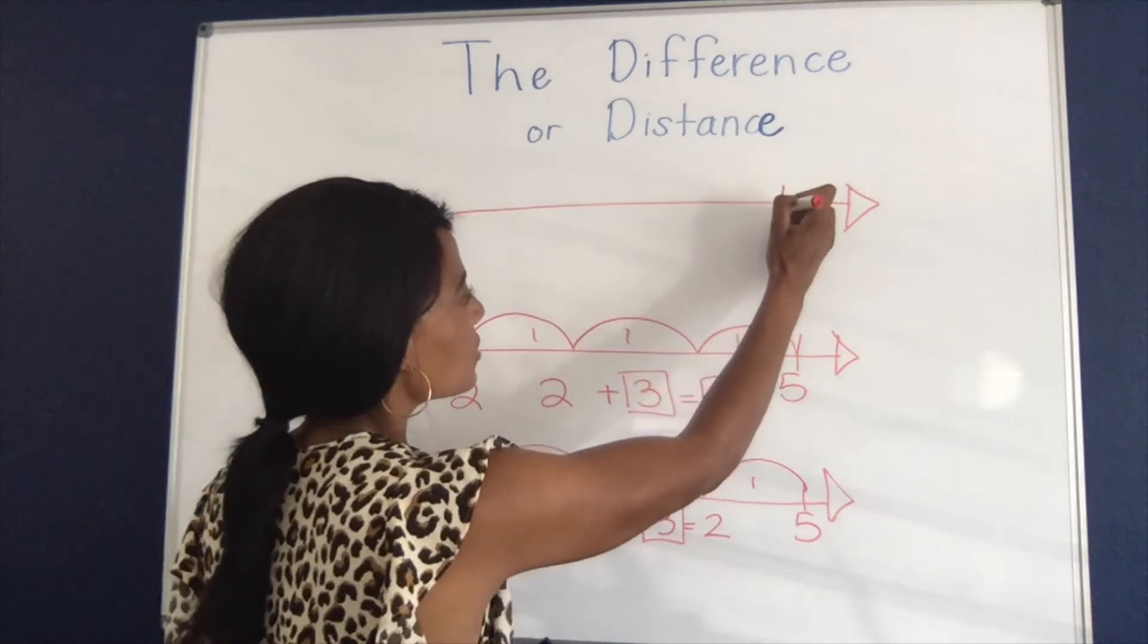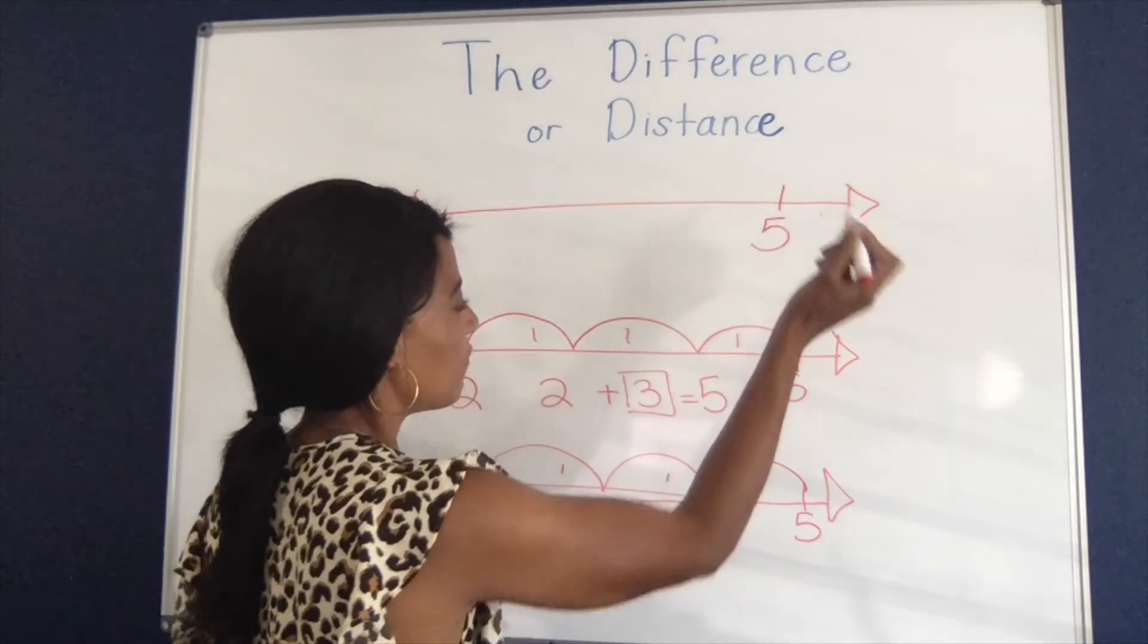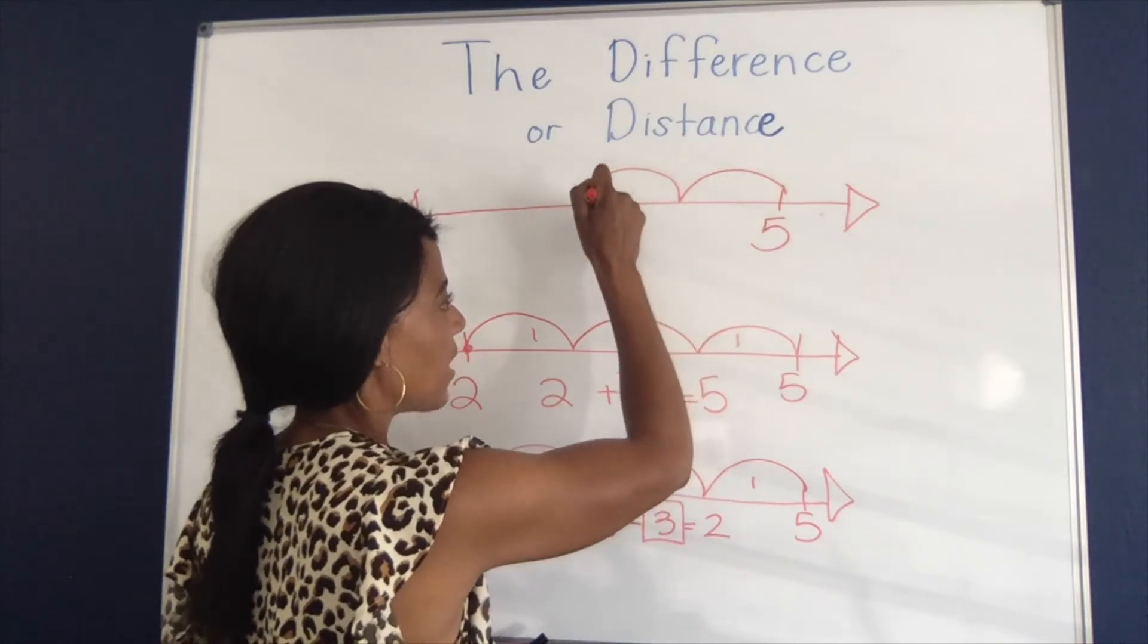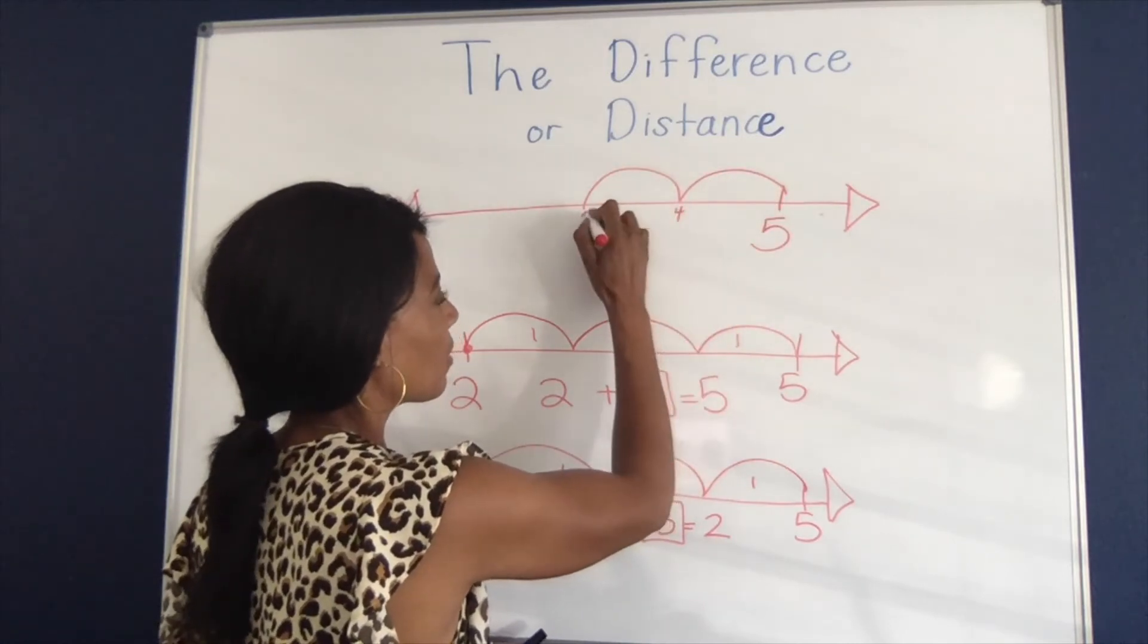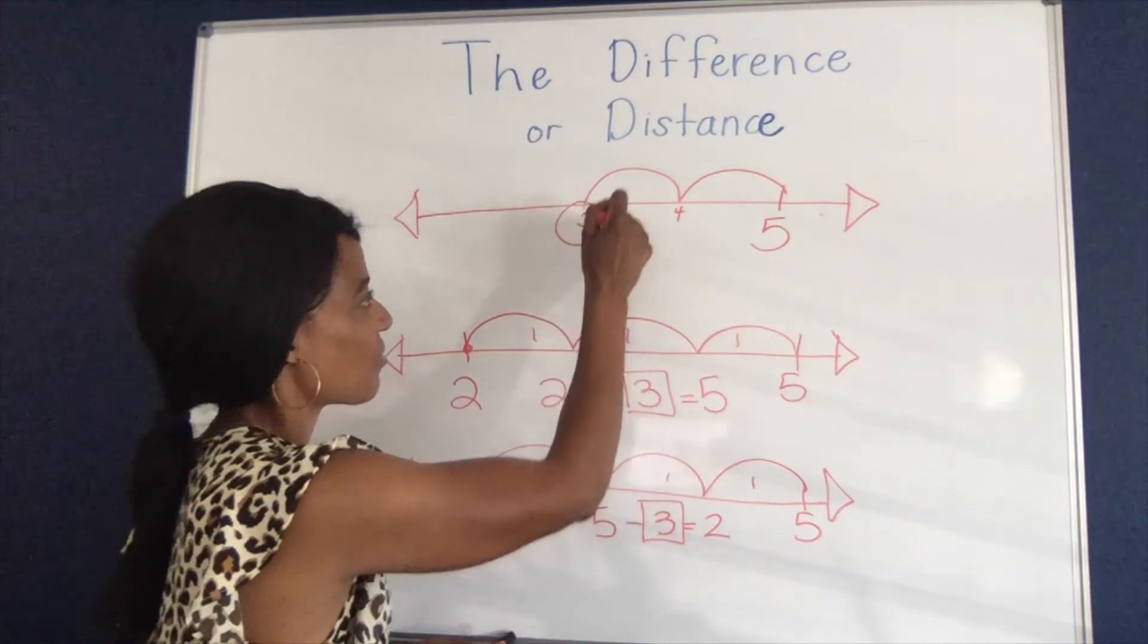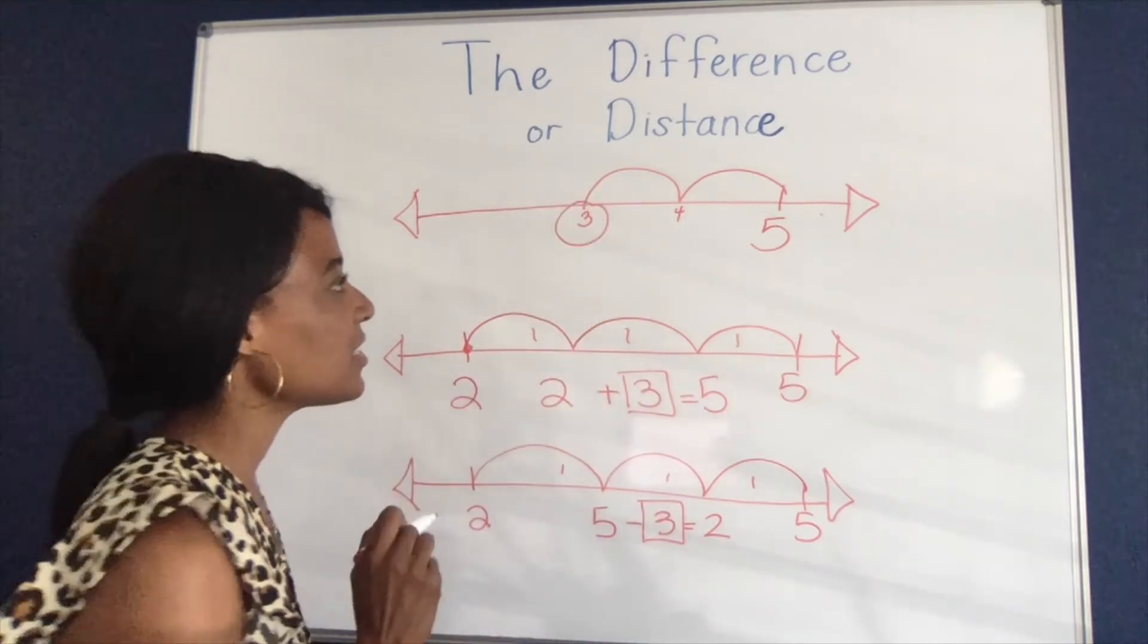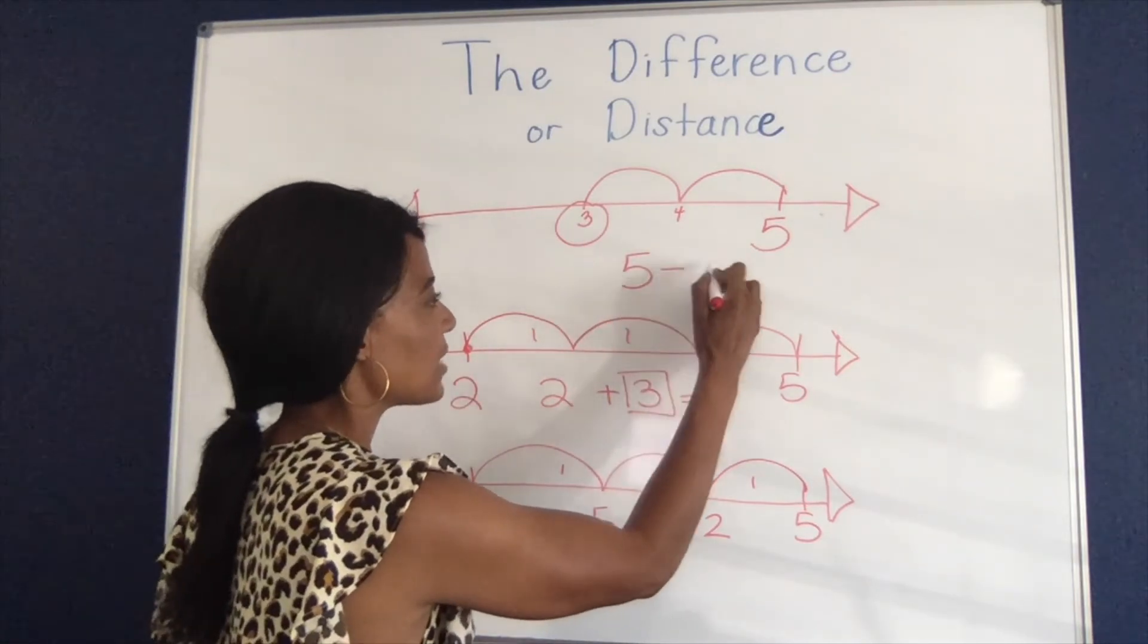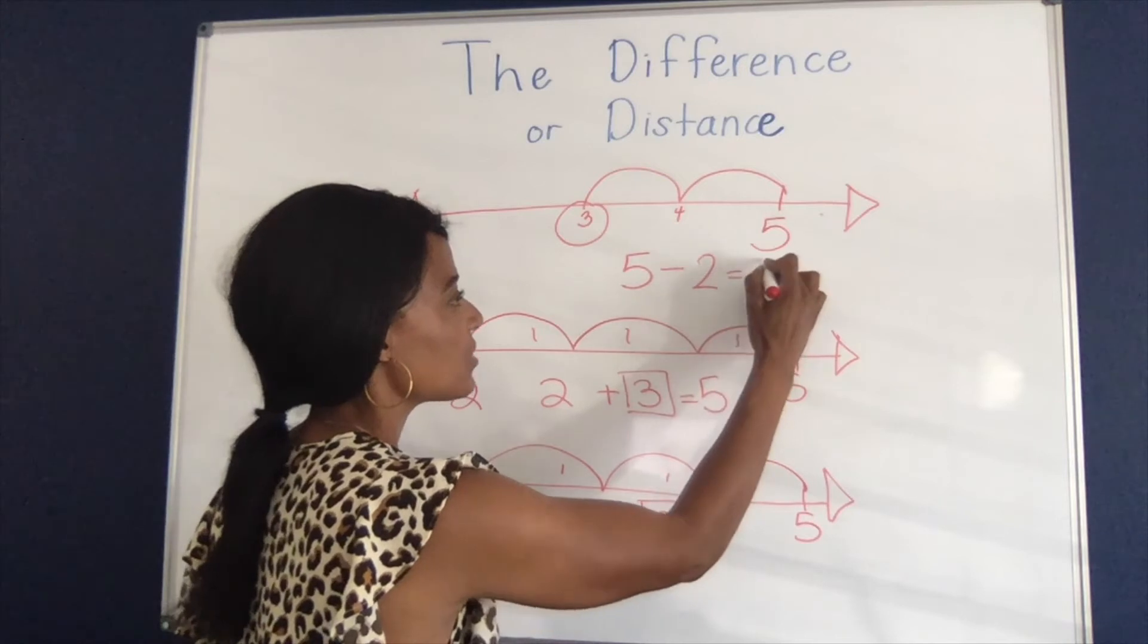But a student could still start with five, subtract two by counting down, and land on three. So this equation looks a little more traditional. 5 - 2 = 3.